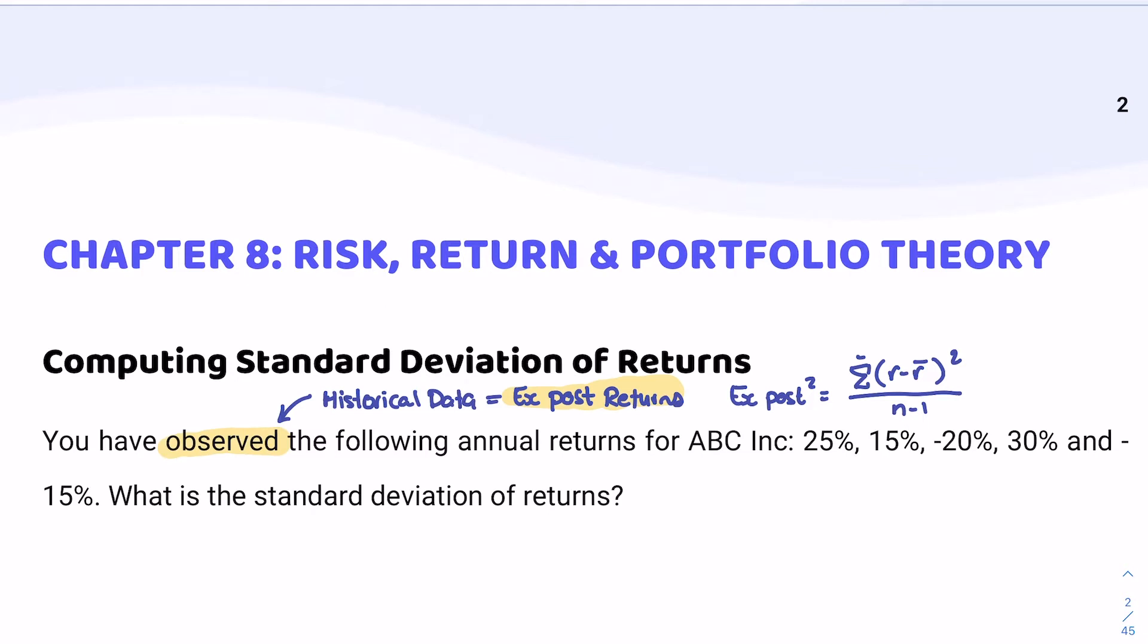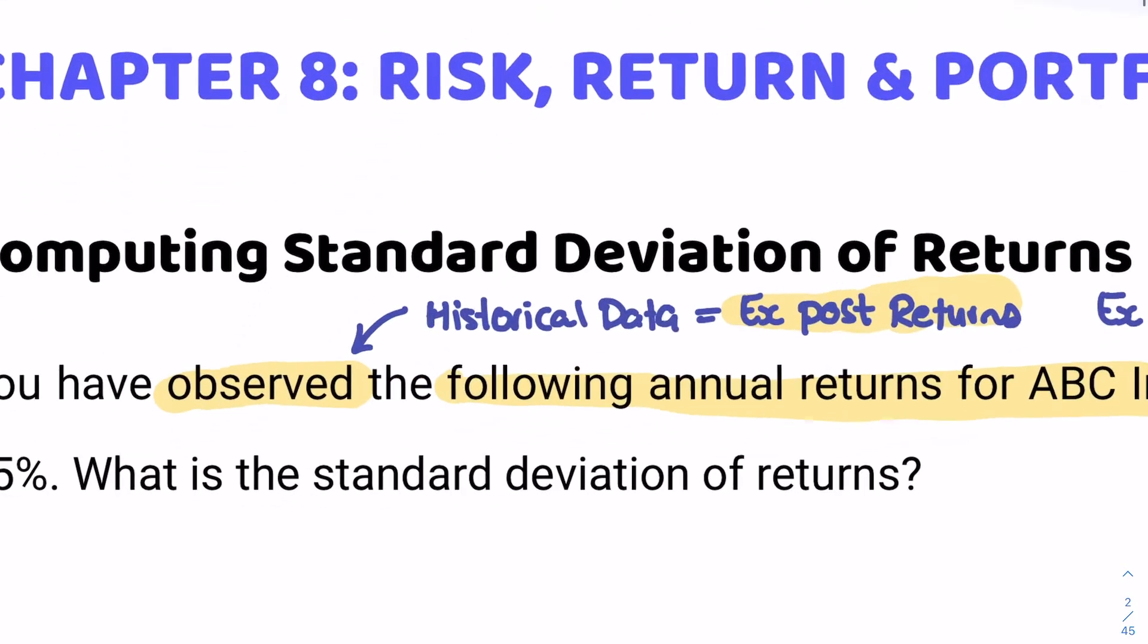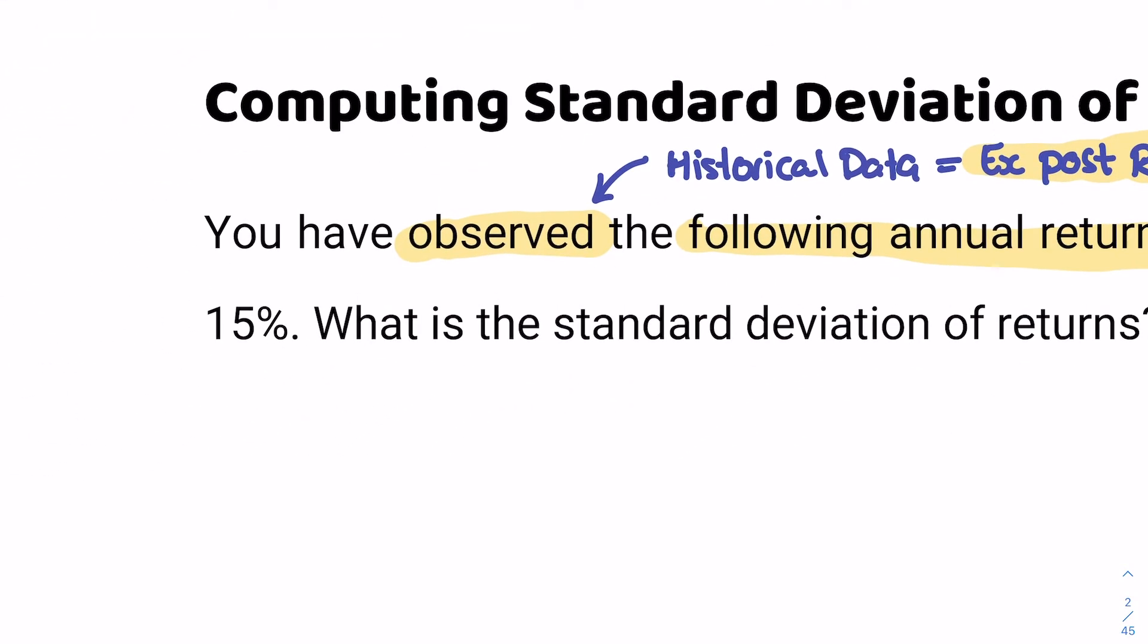The first step is because we know we're calculating standard deviation, and when we're looking at our formula, we see that we need to find the mean. This question does not provide the mean. They only give us the following annual returns. So the first thing to do is figure out what is the mean with this set of data. That's pretty straightforward. So let's calculate the mean of our observed returns.